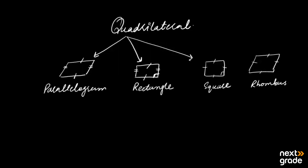We will define all these categories one by one — which shape belongs to which category. In the next lecture, we will check in the Cartesian plane whether any given quadrilateral figure is a parallelogram, rectangle, square, or rhombus.